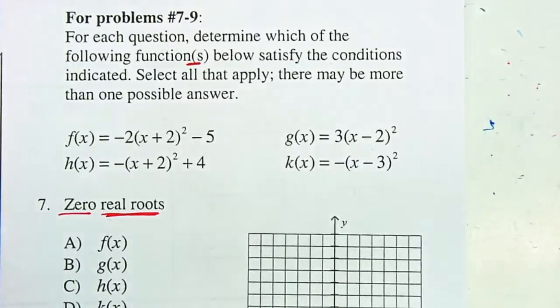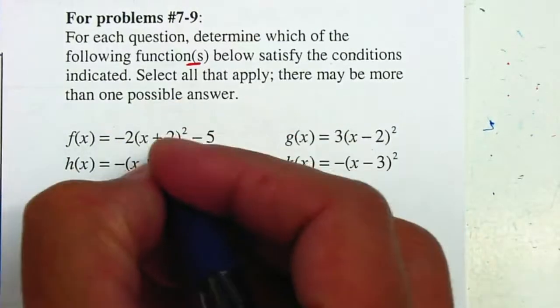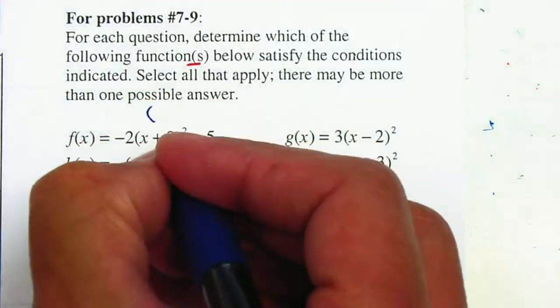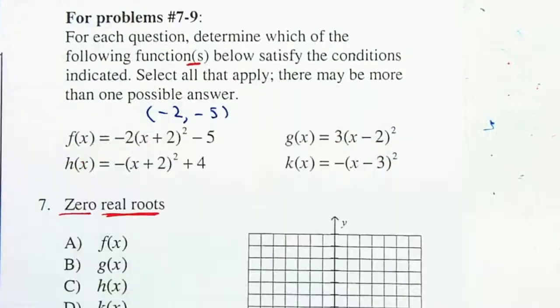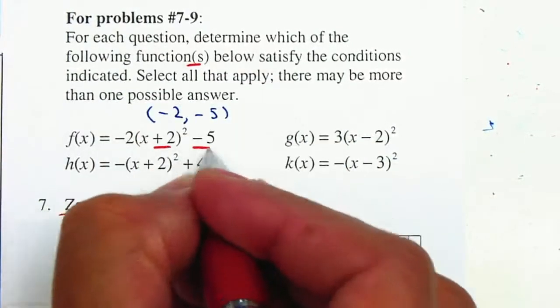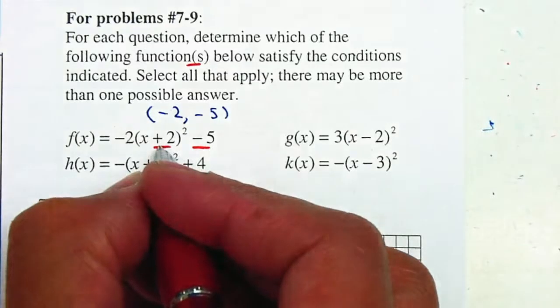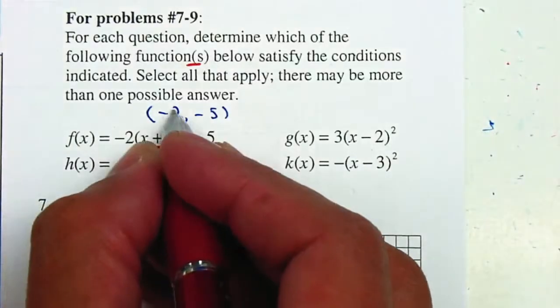So I just need to be able to graph each one. I'll actually just make a quick sketch. On the first one, I'm going to find my vertex, which is negative 2 and negative 5. Remember, your vertex is your h and your k. Your h is going to be the opposite. This is a positive 2, that'll be negative 2.